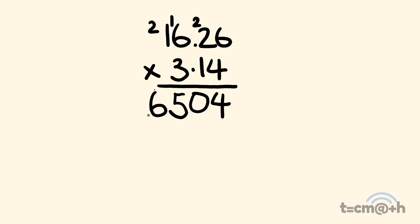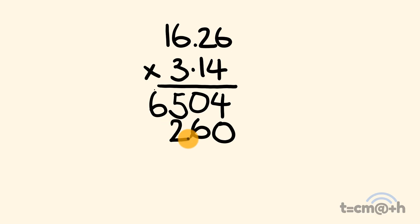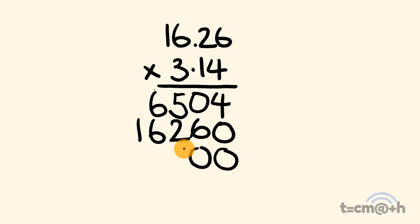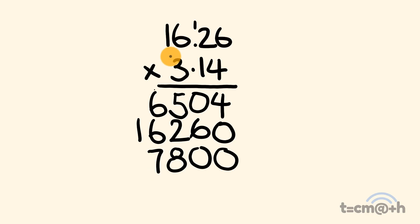For the next line we put a zero down and start multiplying. 1 times 6 is equal to 6. 1 times 2 is equal to 2. 1 times 6 is equal to 6. And 1 times 1 is equal to 1. For the next line we put two zeros down. 3 times 6 is equal to 18 — 8 there, carry the 1. 3 times 2 is equal to 6, plus 1 is equal to 7. 3 times 6 is equal to 18 — put the 8 there, carry the 1. And 1 times 3 is equal to 3, plus 1 is equal to 4.